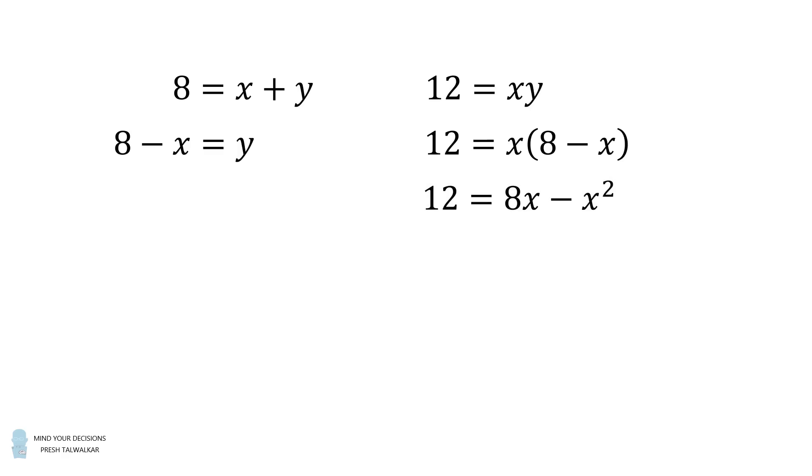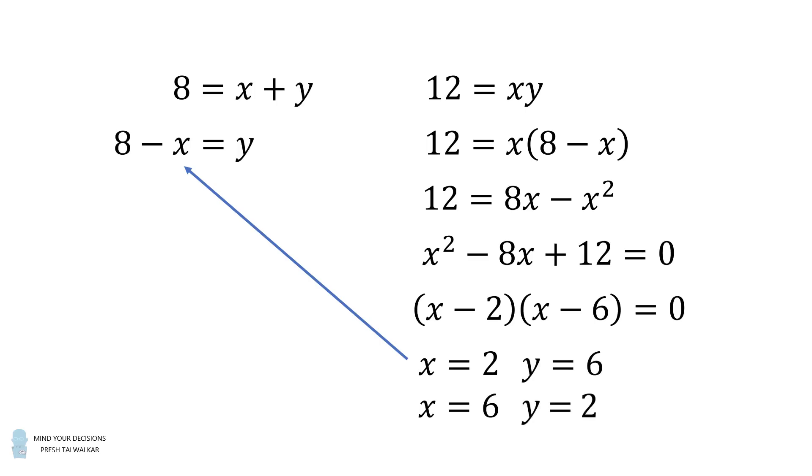We'll then distribute the x term. We now have a quadratic equation. x squared minus 8x plus 12 is equal to 0. We can factor this rather easily. It will be factored into the linear terms of x minus 2 and x minus 6. We thus have two solutions. x is equal to 2 and x is equal to 6. We can solve for y by substituting into the equation y is equal to 8 minus x. This yields y is equal to 6 and y is equal to 2.